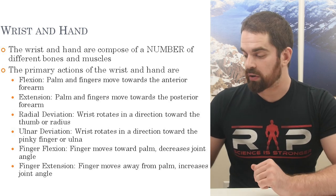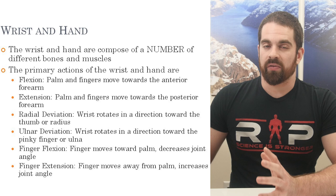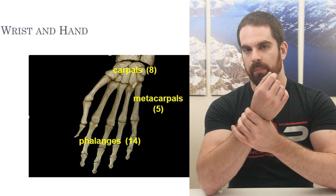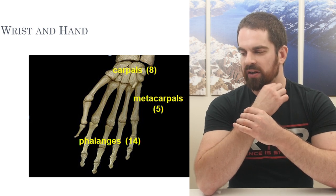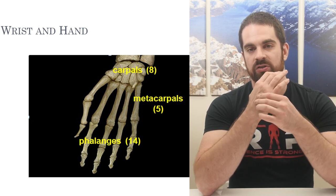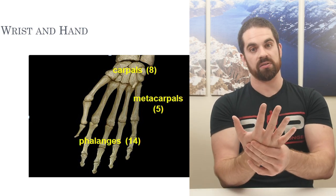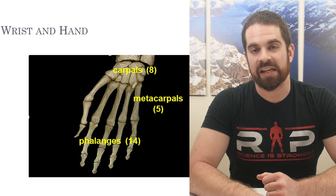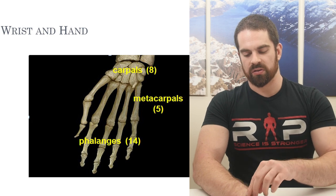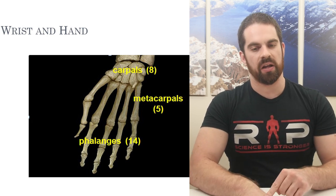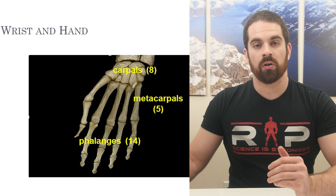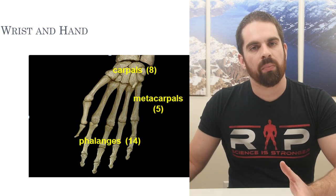The wrist and hand are made up of a number of different bones. We have eight carpal bones that make up the wrist — small, cube or irregular-shaped bones. We have five metacarpals, the medium-sized intermediary bones between the wrist and the hand. And then about 14 phalanges, which are the upper finger joints. The carpals are wrist bones, metacarpals are the big bones of the hand, and phalanges are the smaller joint bones in the fingers.